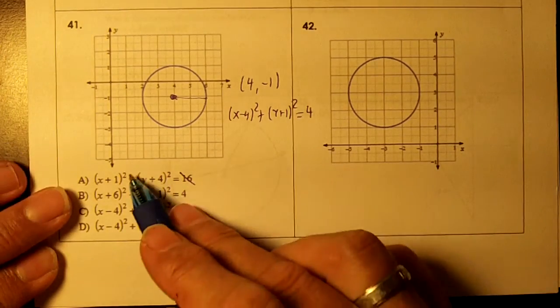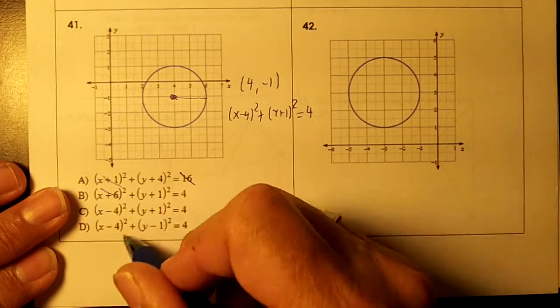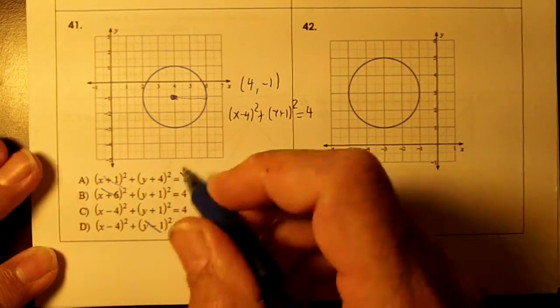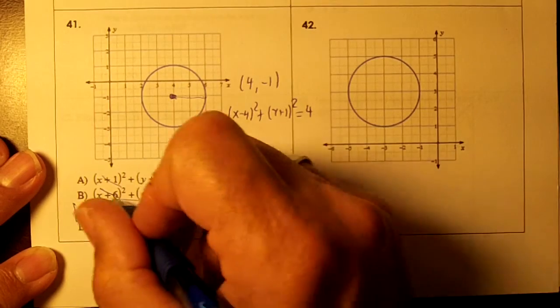This one's wrong. x minus 4, that's wrong, that's wrong. And then I need a y plus 1, that's wrong, so c is it in it.